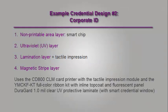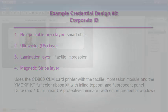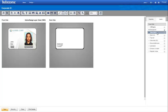Several of the features you want to include in your credential design are supported with their own layer in True Credential software. In this example, we discuss the following layers and elements: the Smart Chip element and the Non-Printable Area layer, the Ultraviolet UV layer, the Lamination layer which includes tactile impression, and the Magnetic Stripe layer. We've already designed the background and color layers using elements discussed in the first example.